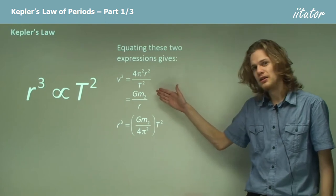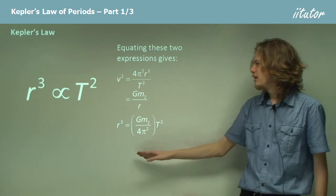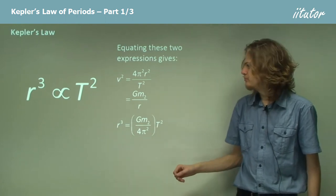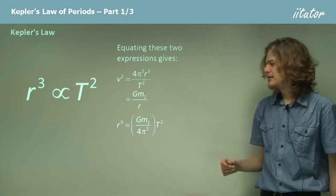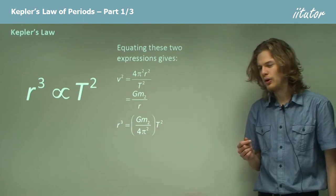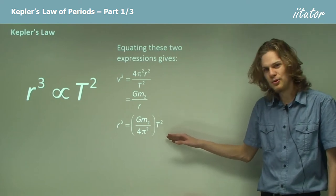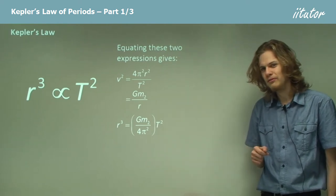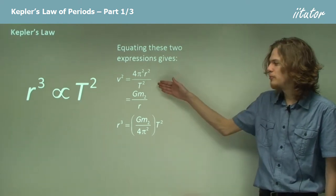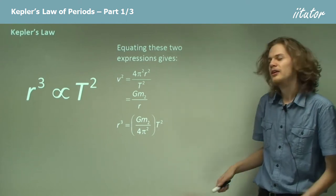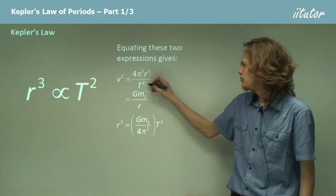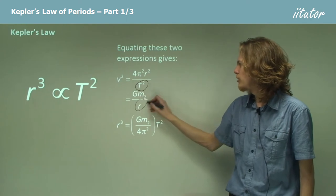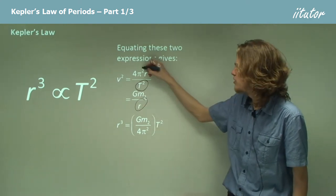By rearranging this, we end up with the equation r³, that is multiplying both sides by r, equals Gm over 4π² times T². Can you see how we got from here to here? It's a simple matter of multiplying both sides by this denominator and dividing both sides by this 4π².